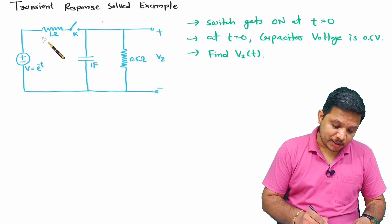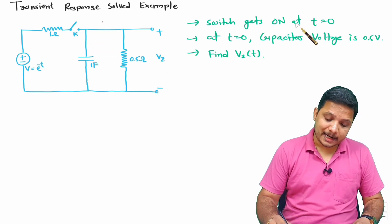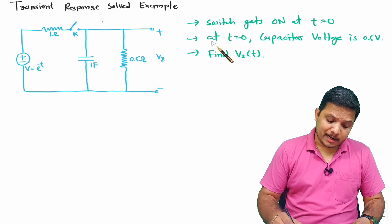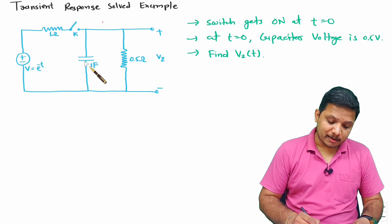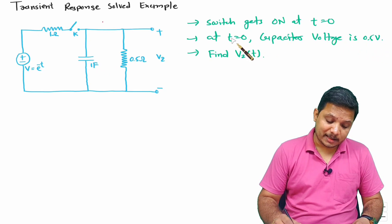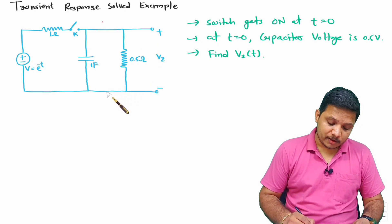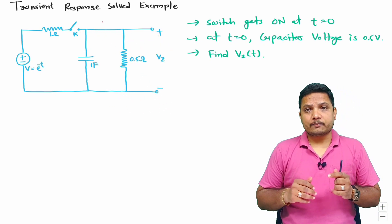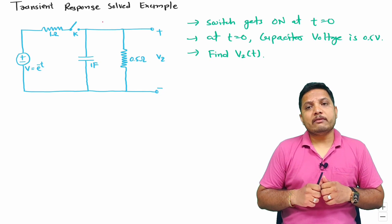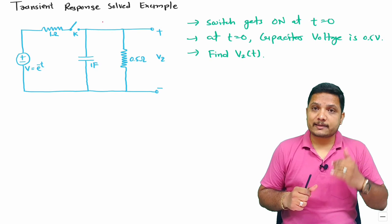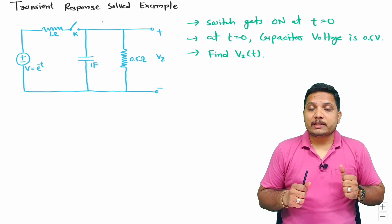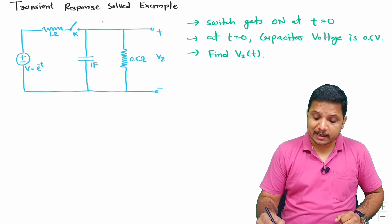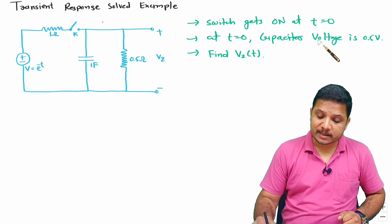In this question, switch K is getting turned on at t=0. At t=0, it has been given that the capacitor voltage is 0.5 volts. So we have a capacitor with voltage 0.5V at t=0, and we are required to find V2(t), which is the expression of voltage across these two terminals.